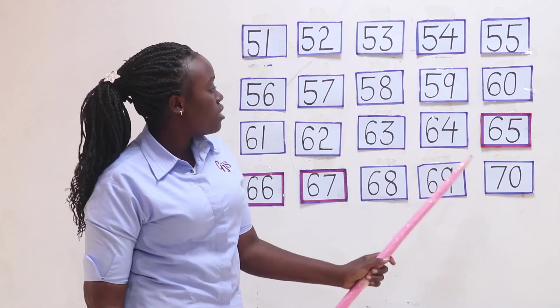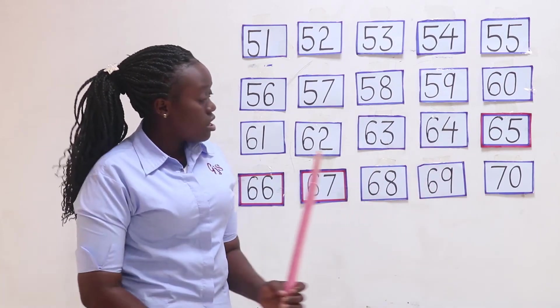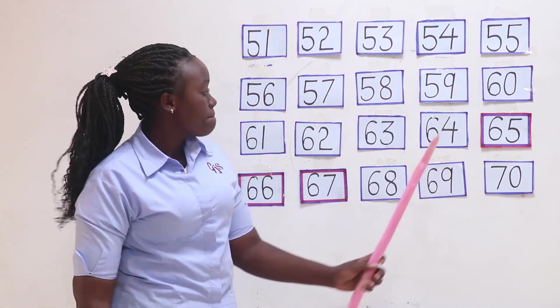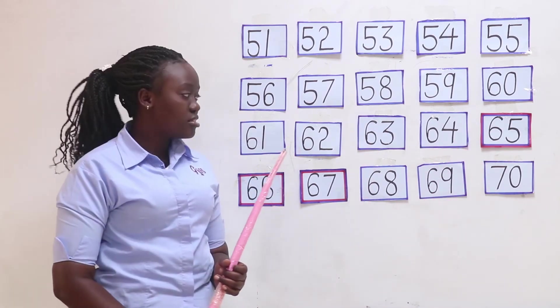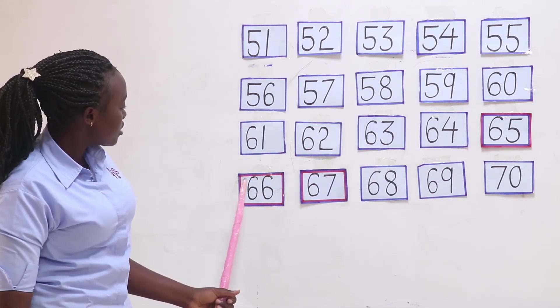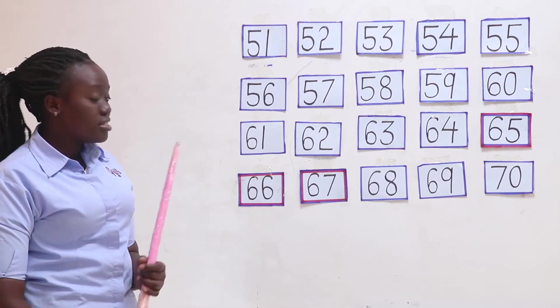We have 6 and 4, and we read it as 64. Next we have 6 and 5, and we read it as 65. We have 6 and 6, and we read it as 66.